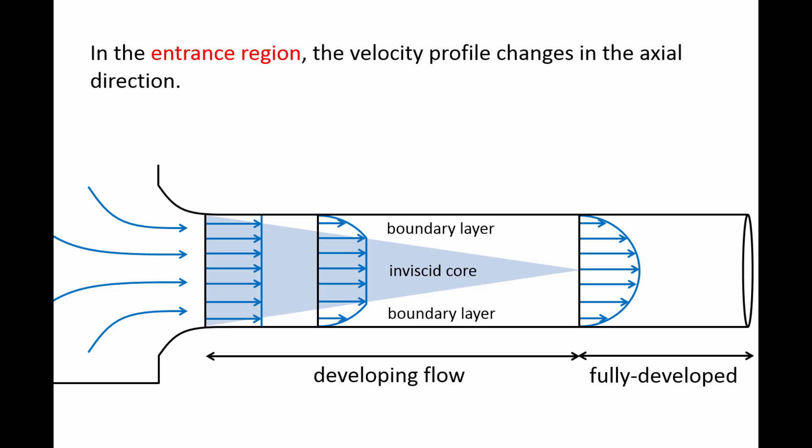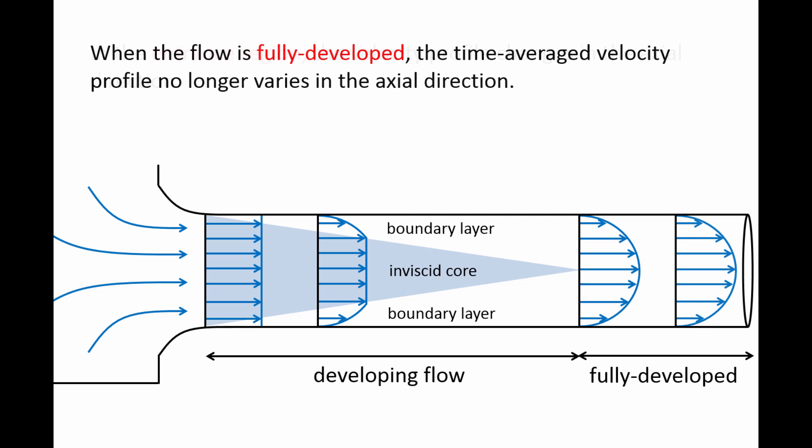In the image shown here, the profile is parabolic, which is characteristic of laminar flows. Once a flow is fully developed, the time-averaged velocity profile does not change in the axial direction.